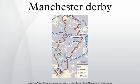The first meeting between the two teams occurred on November 12, 1881, when West Gorton, who would later become Manchester City, hosted Newton Heath, who would later become Manchester United. The game finished 3-0 in favour of Newton Heath and was described by the Ashton Reporter as a pleasant game. At this time, the clubs were just two of many fledgling sides in the Manchester area, and the fixture had no special significance.